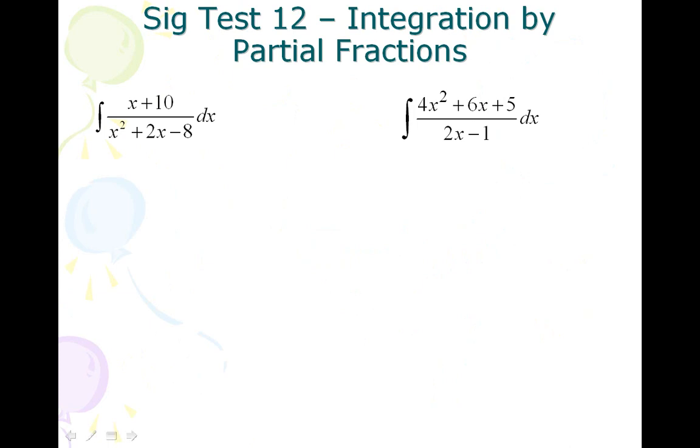The first example, the denominator is a higher degree than the numerator, so this one we do by partial fractions. So if you factor x squared plus 2x minus 8, you get x plus 4 times x minus 2.